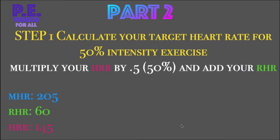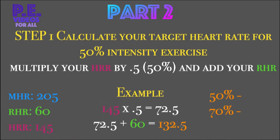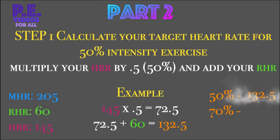Part two, step one: calculate your target heart rate for 50% intensity exercise. To do this, you need to multiply your heart rate reserve by 0.5 and add your resting heart rate. Example: 145, that is your heart rate reserve, times 0.5 equals 72.5. And then, 72.5 plus 60, which is your resting heart rate, equals 132.5. That is your 50% target heart rate.